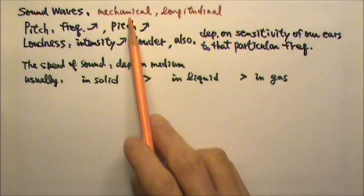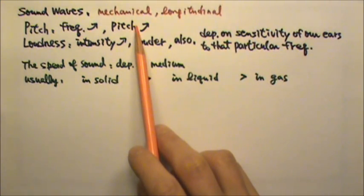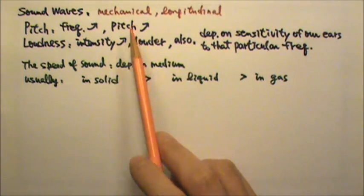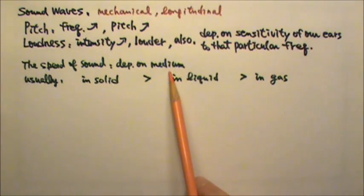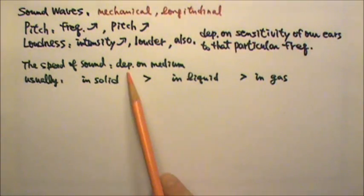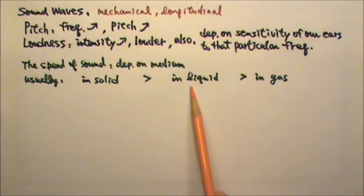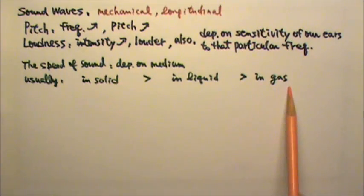Sound waves are mechanical waves because sound requires a medium to travel in. The speed of sound depends on the medium. Usually the speed in solid is faster than the speed in liquid and the speed in liquid is faster than the speed in gas.